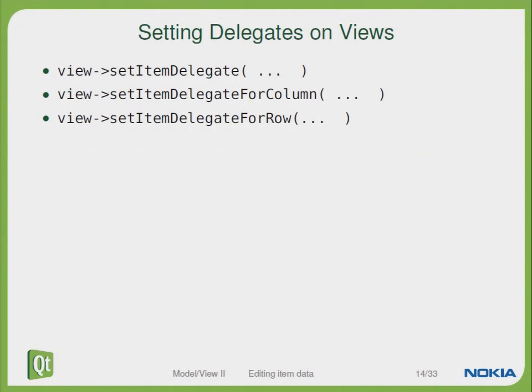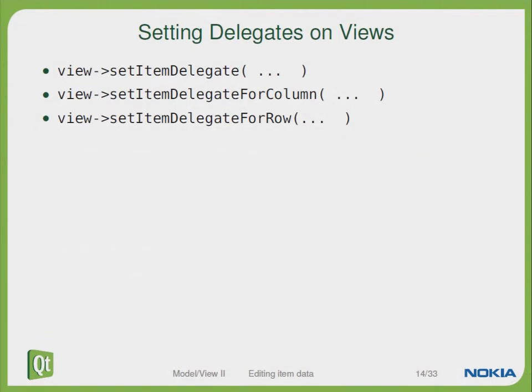How can we set the correct delegate on the views? Here are three examples. We can call setItemDelegate on the view, or we can specify a setItemDelegate for a specific column, or a specific row in a third example.